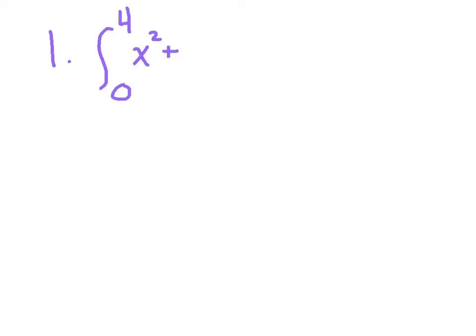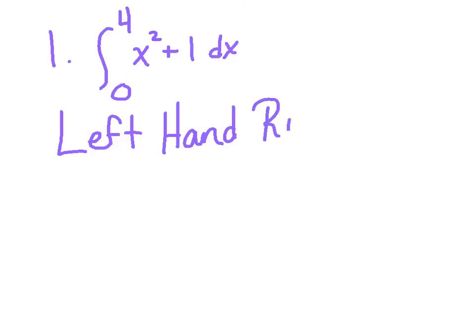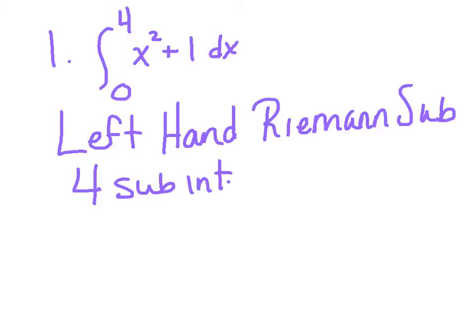Let's start with our first example. Let's say we want to approximate the area under the curve from 0 to 4 of x squared plus 1. If I wanted the exact area, I would integrate, get my x cubed over 3 plus 1x, and plug in my upper bound minus my lower bound. But I don't want that exact area, so I'm going to use a Riemann sum. They'll be specific on which type they want you to use, so let's start off with a left-hand Riemann sum. They'll tell us the amount of sub-intervals — let's start with 4 sub-intervals of equal length.